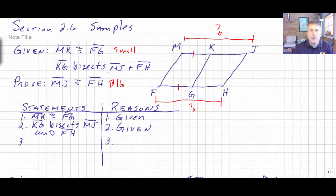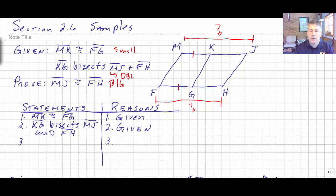We've got a double bisector here — we're bisecting two things. So we're going from small to big with a double bisector, and we should be thinking multiplication. The nice thing about multiplication and division is we let you skip writing out the definition of a bisector. We've taken these two small things and created like multiples, so we let the double bisector do the work and jump right to our conclusion: MJ is congruent to FH by multiplication.